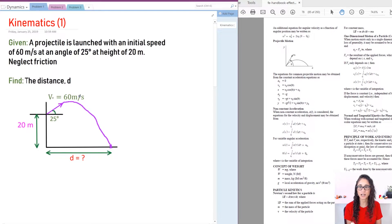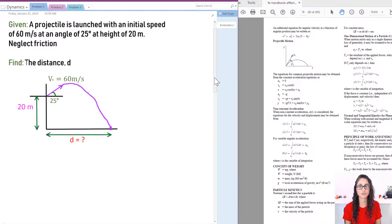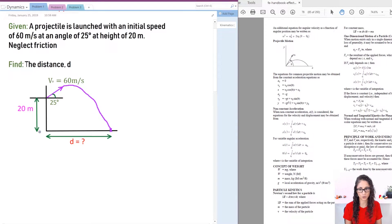So we're given a projectile that is launched with an initial speed of 60 meters per second at an angle of 25 degrees and at a height of 20 meters, and we need to calculate this distance right here when it's going to fall to where it started. So let's first write what's given to us and what's not given to us.